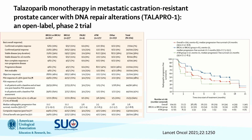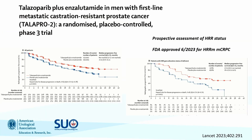Turning to talazoparib — I first saw it evaluated in a phase two open-label trial used as monotherapy in patients with metastatic CRPC who had progressed with measurable soft tissue disease, prior hormone therapy, and prior taxane therapy. The objective response rate favored talazoparib, laying the groundwork for further studies that have led to FDA approvals.